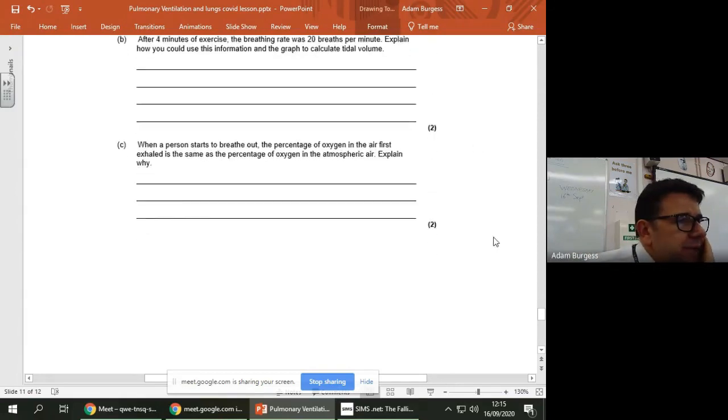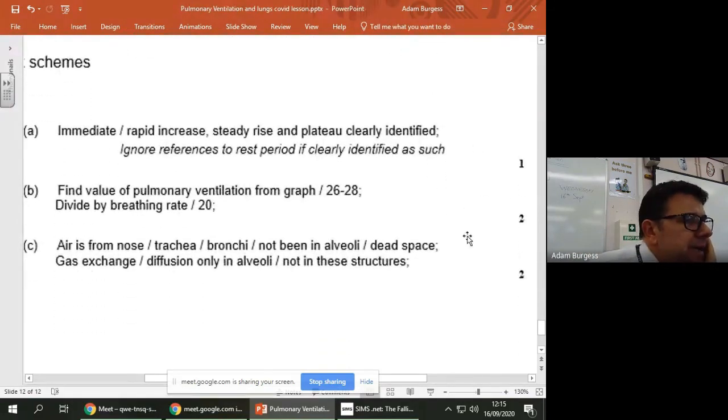All right, so if we look at the answer. So when you breathe out, the air is coming from the trachea or bronchi, okay, and it's not been in the alveoli. So that is what you could say, we're talking about residual air.